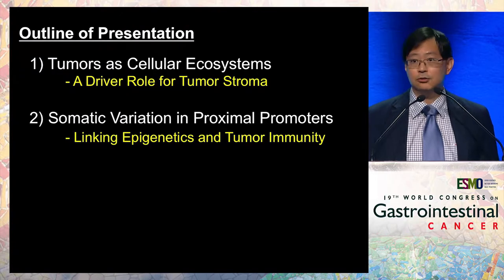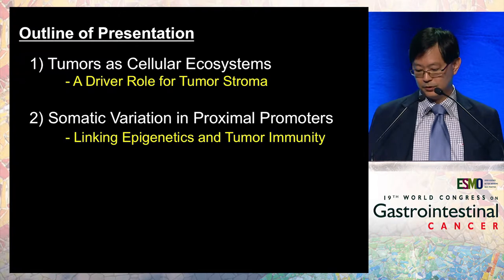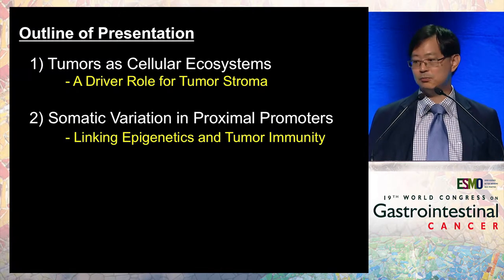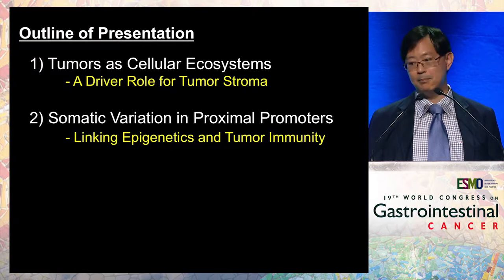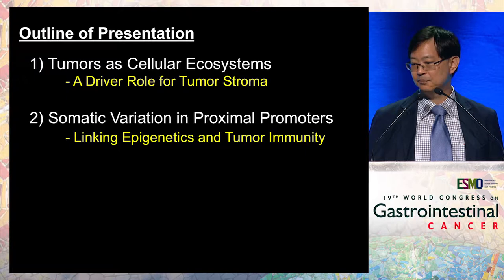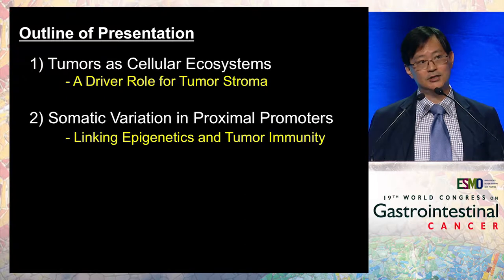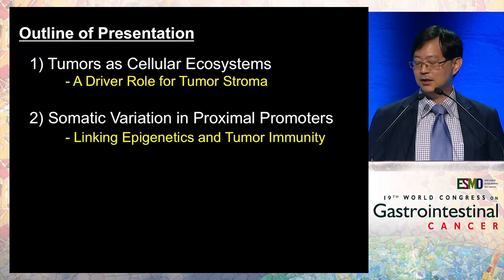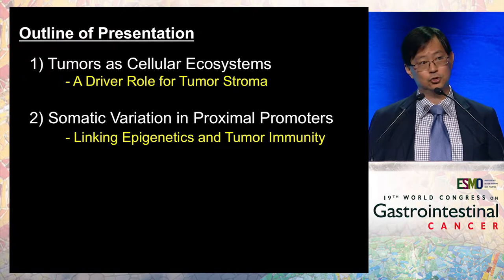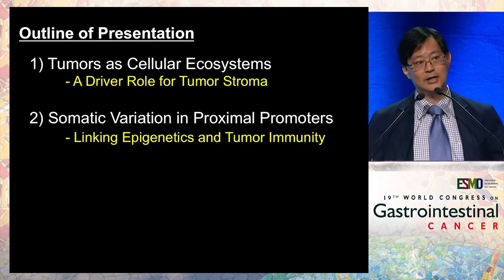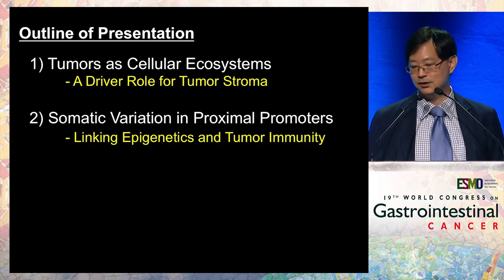What I'd like to do today is to focus upon two recent studies from our group. We'll give you one story on looking not at the cancer cells but at the tumor microenvironment and the role of the stroma in driving disease progression in gastric cancer. We'll then move on to a more epigenome-based study where there's a surprising link between epigenetics and promoter elements — and how this may contribute to one of the hottest areas in the field today, which is the concept of anti-tumor immunity.